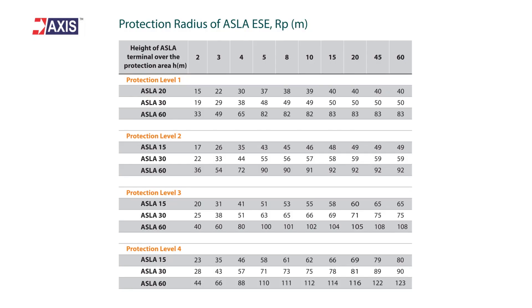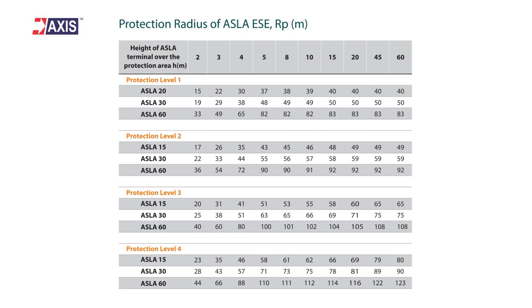We have done all the hard work of calculating this formula for various configurations so that you don't have to. Just refer to this table to know the radius of protection for your structure. Now let's use the same values as the example above using this table. Let's say the height of your ESC arrester is 5 meters, you are aiming for a protection level of 4 for the ASLA 60 model, and using the table again, you get the coverage area as 110 meters.